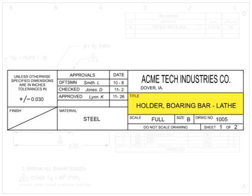The drawing title block can also be called the noun or nomenclature. A short description of what the item depicted, or the name of the part, is typically located in this block. The drawing number gives the drawing a unique identifier as a standalone document.